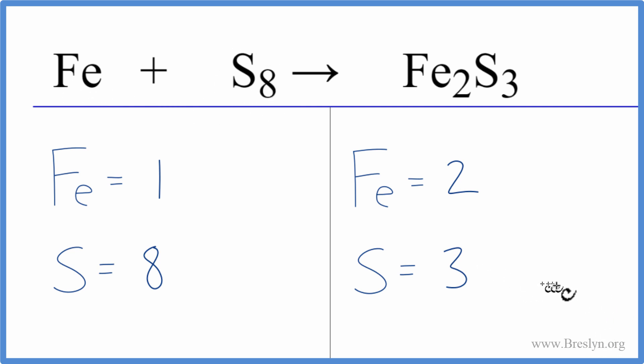To balance the equation, we need everything equal on both sides, and this 8 here and this 3 here, that's challenging. So I'm going to use a bit of a trick. I'm going to take the 3 here and put that as the coefficient for the S8. So now I have 8 times 3, that'll give me 24 total sulfur atoms.